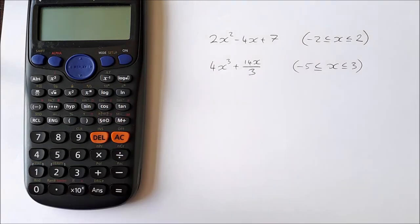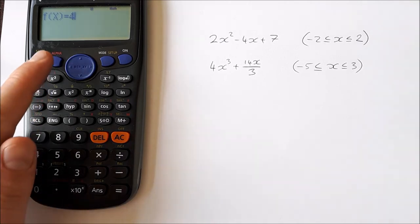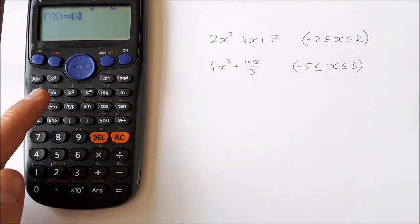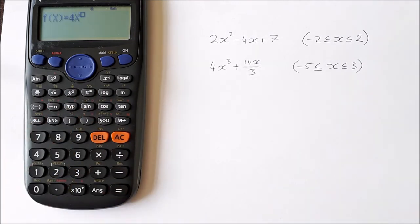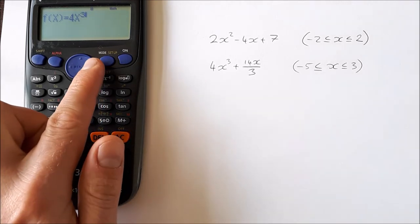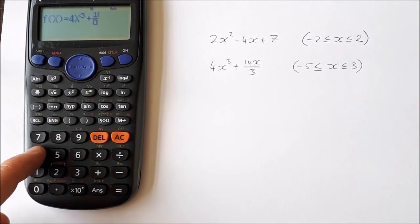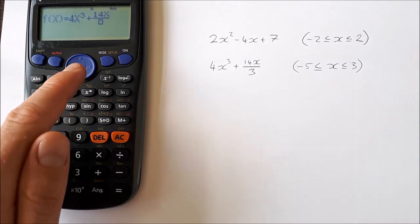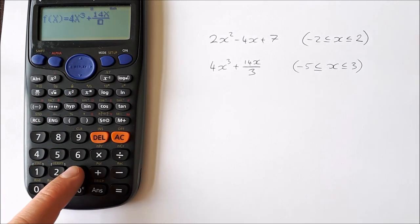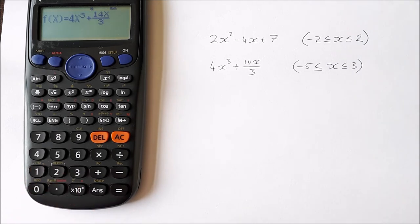Okay, let's try our other one. f(x) equals 4x³, so that's 4 Alpha X. Now to cube it we don't go with the square button, we go to the power button and we need to type in 3. When you use the power button you have to press across to get back out of the power. Then we press plus. Now I want 14x over 3, so that's a fraction: 14 Alpha X, press down, over 3. And that's our function: 4x³ + 14x/3.